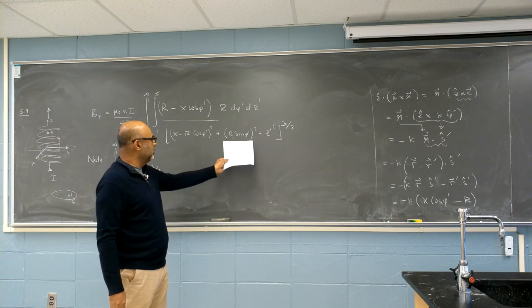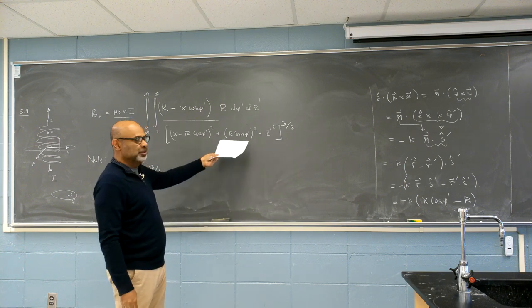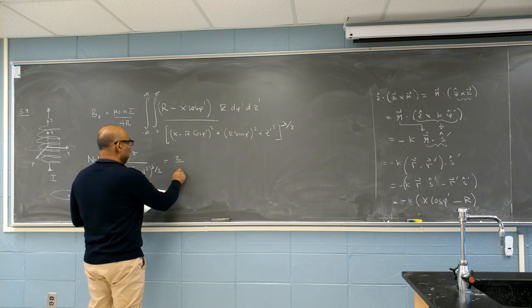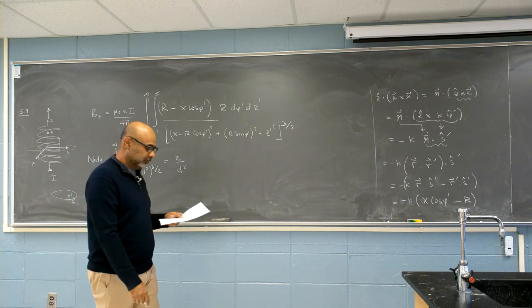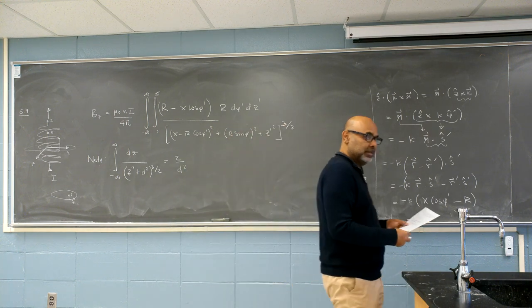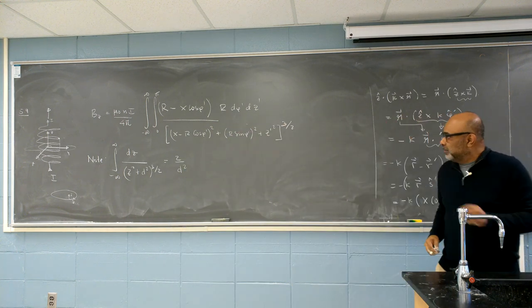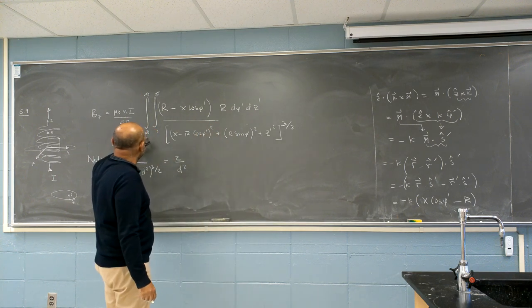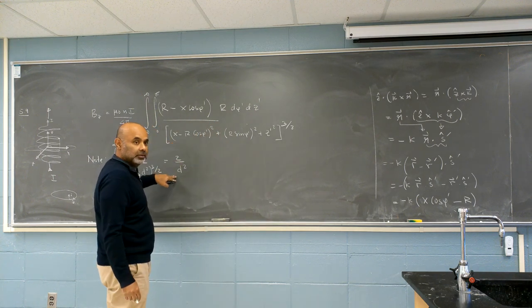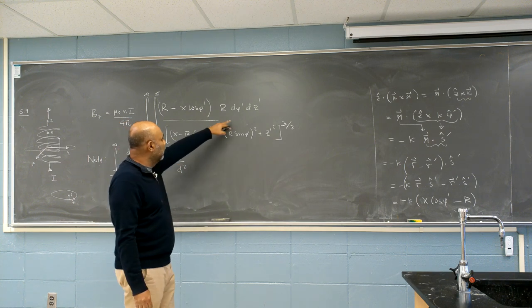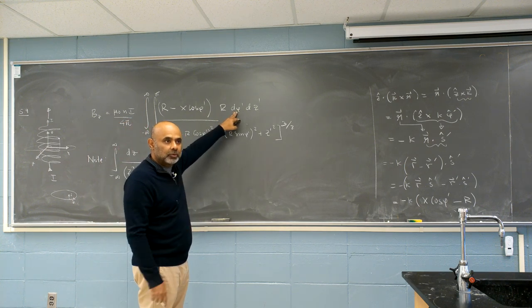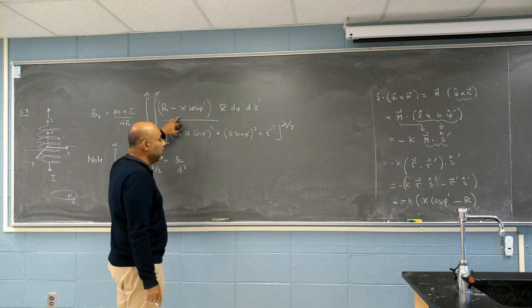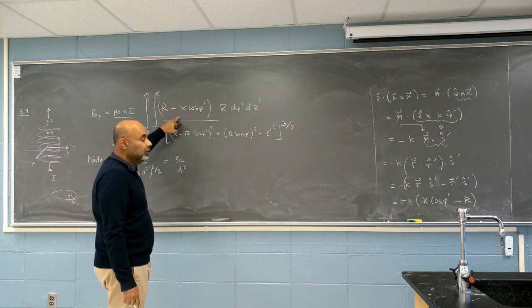Yeah. So that means this integral, when integrated from negative infinity to infinity, is finite. Well then you do a phi integral. Well phi integral is only going from zero to two pi. So it's finite. If you have finite integral. Then.